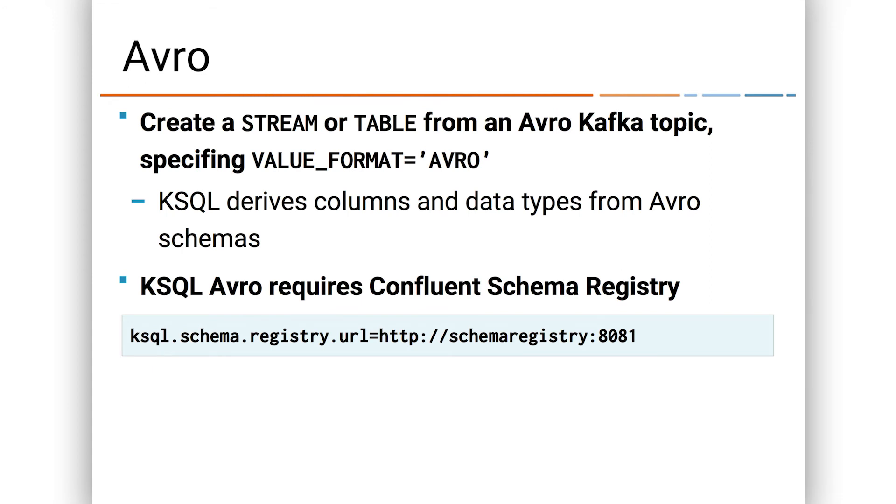And now let's talk about Avro in a little bit more detail. To create a stream or a table from an Avro Kafka topic, that is a Kafka topic whose message values are Avro, they're serialized using Avro, then we say value format equals Avro in the with clause when we're creating the stream or the table. Before we were saying JSON, now we say Avro. It's as simple as that. KSQL then can automatically derive the metadata, the columns and the data types from the Avro schema. Super handy. You just don't have to worry about it at all. To get this done, it relies on the Confluent schema registry, which is an open source component of the Confluent platform. And in the config file where you start up KSQL, you want to see our video on installing and running KSQL and we show you how to edit the config file. The parameter that you'll change will be KSQL schema registry URL. You'll set that to the URL of the schema registry.